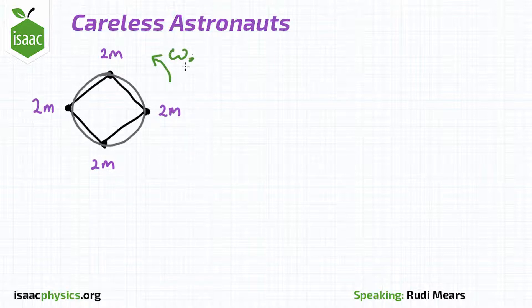This means that each astronaut moves along the same circle. The tension in the ropes, let's call it F in this case, provides the centripetal force required to keep them moving in this circle.